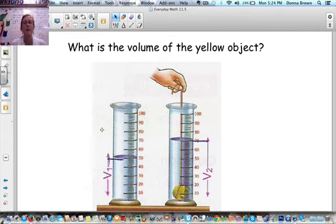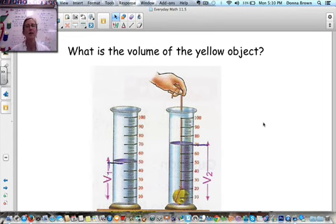And lastly, you are going to figure out the volume of this yellow object here, again, just by looking at volume before, volume on the cylinder afterwards, and find the difference. All right. So that's it.